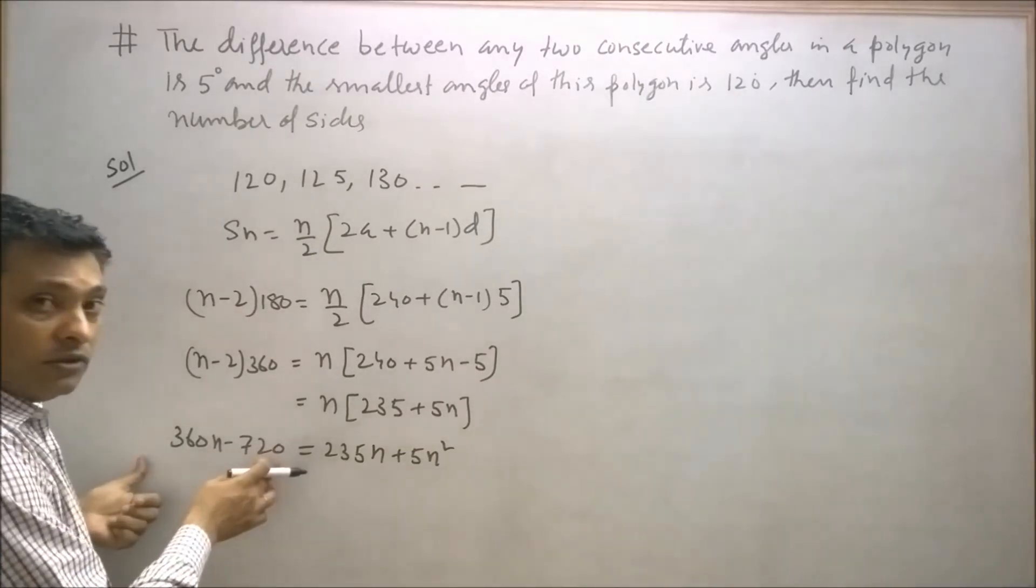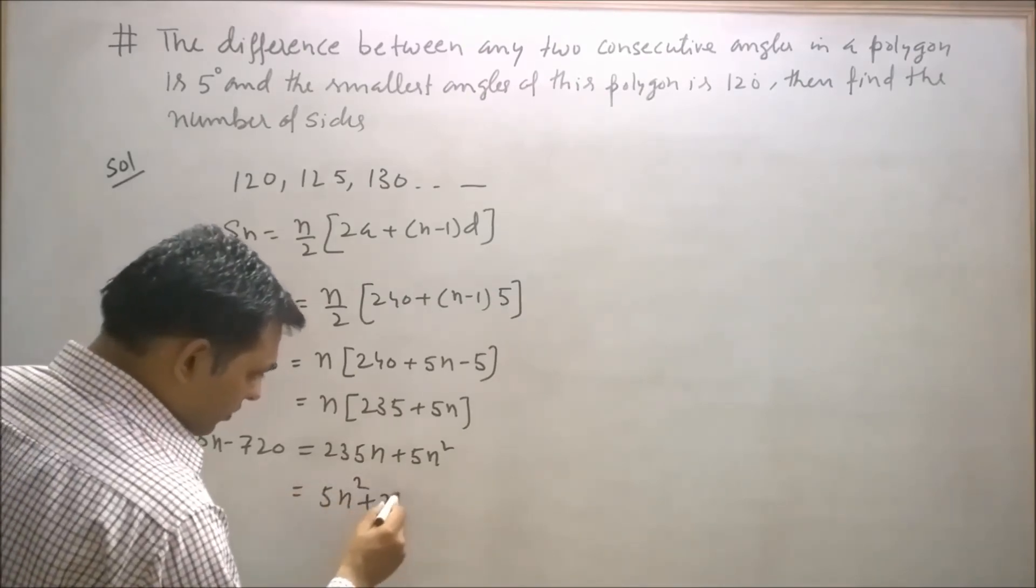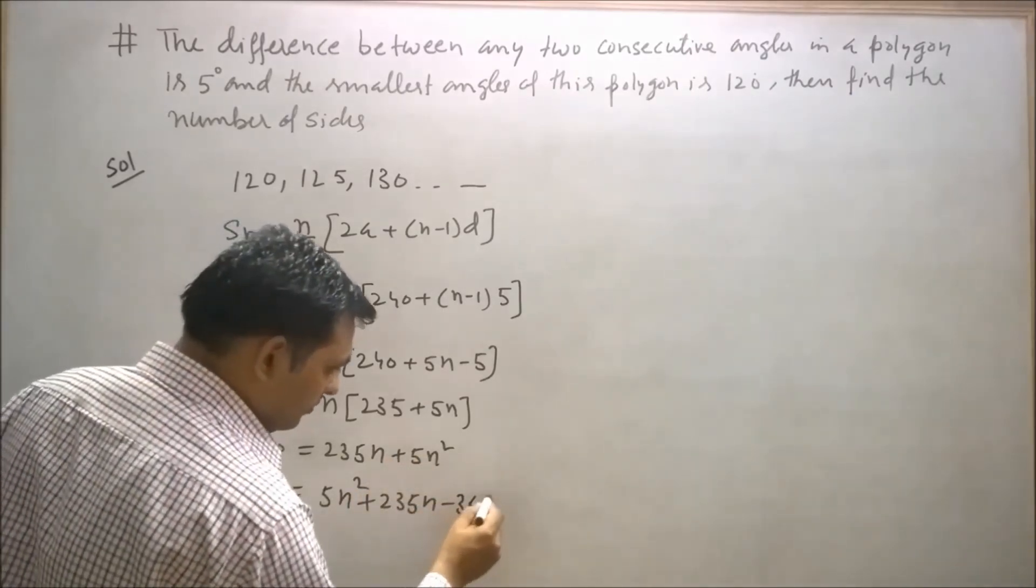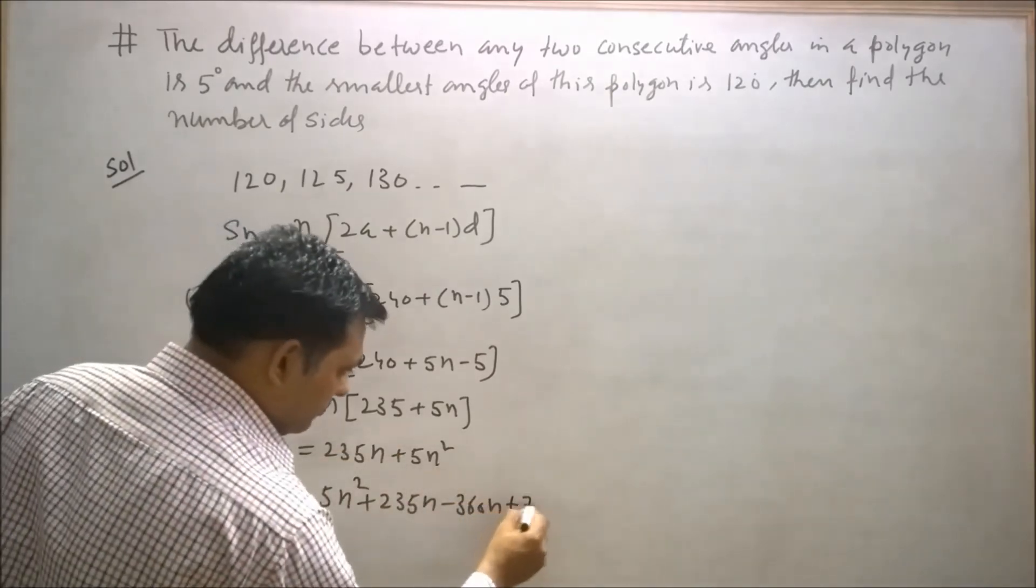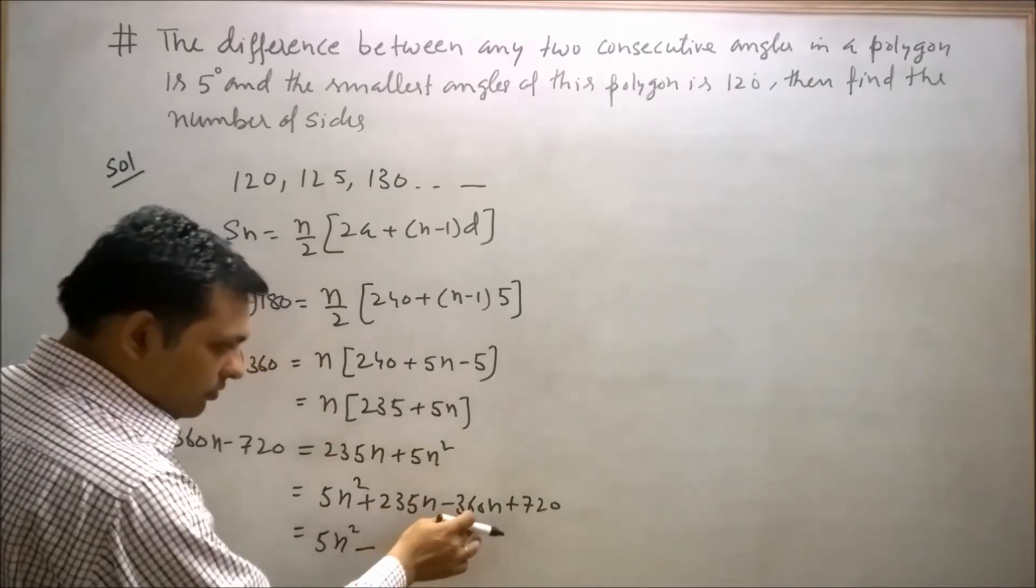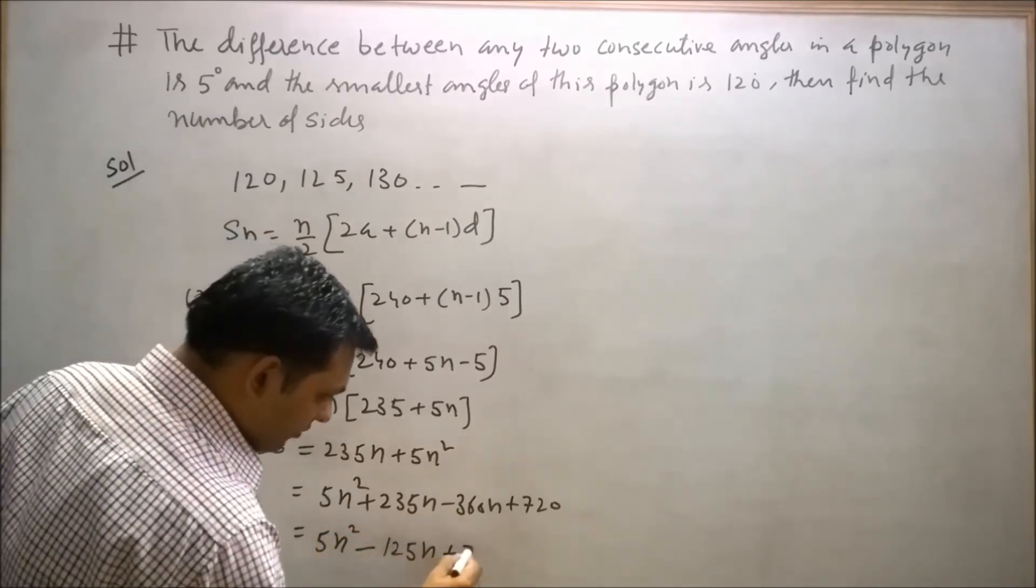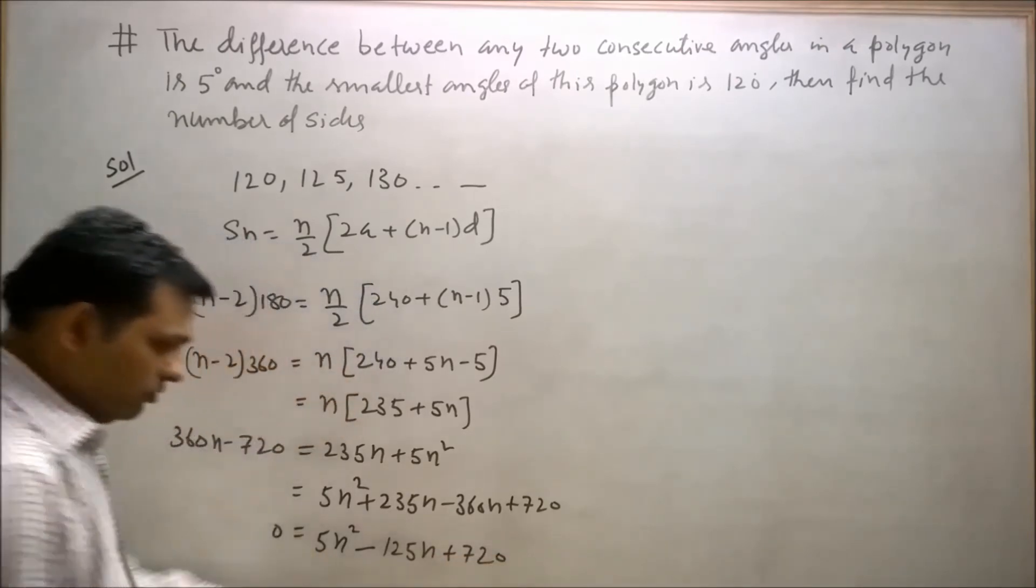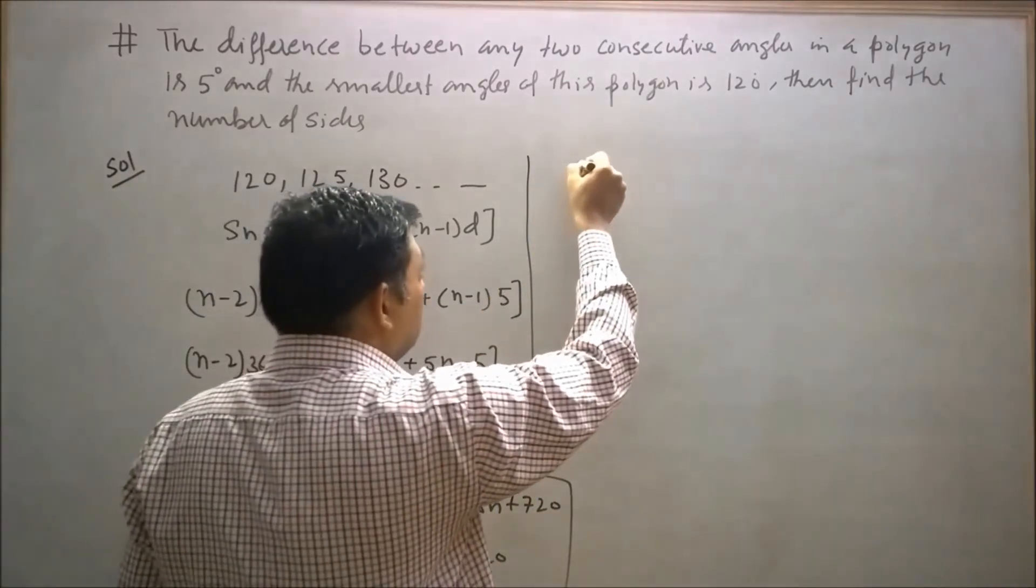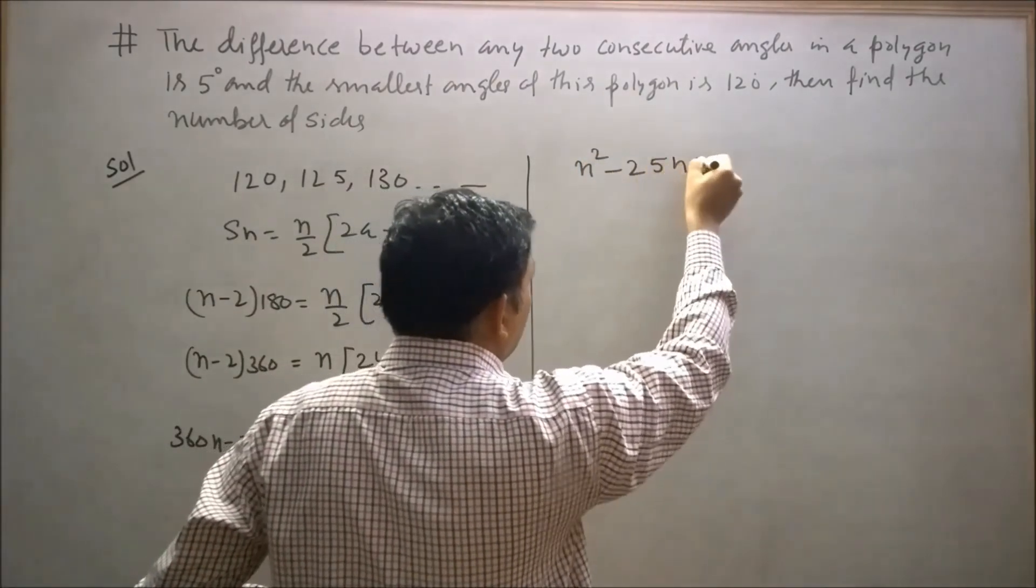So 235n + 5n² = 360n - 720. Transposing all terms to the right-hand side: 5n² - 125n + 720 = 0. Now reduce this equation by 5.